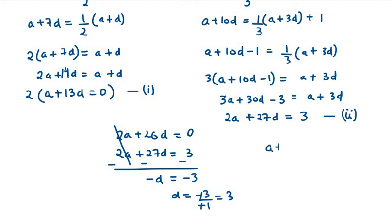We have to now find the value of A. I will use equation number 1: A plus 13D equals 0. A plus 13 into 3 equals 0, so we get A as minus 39.